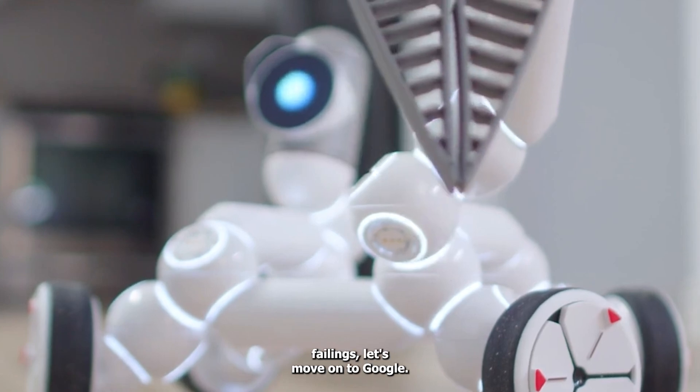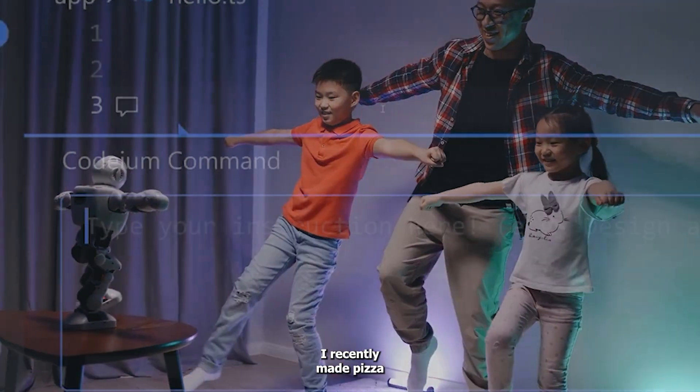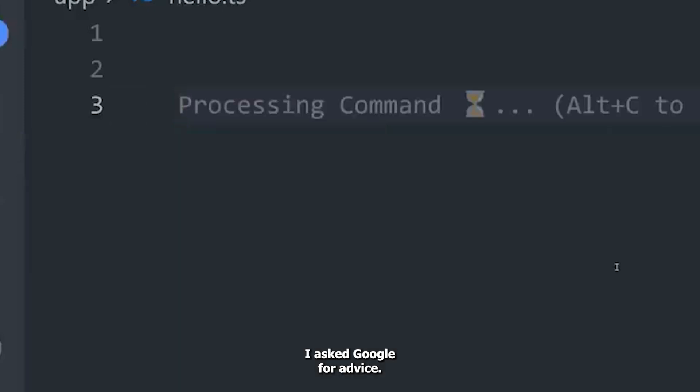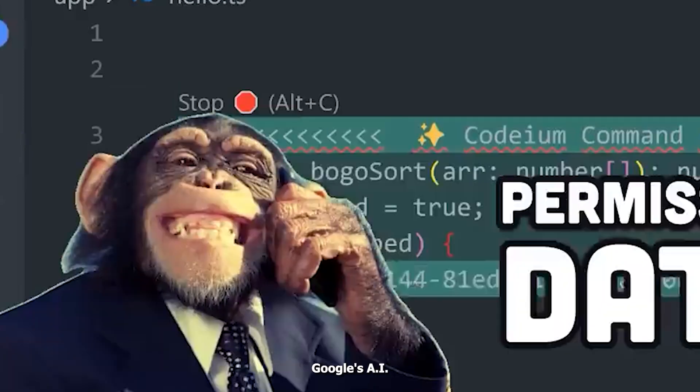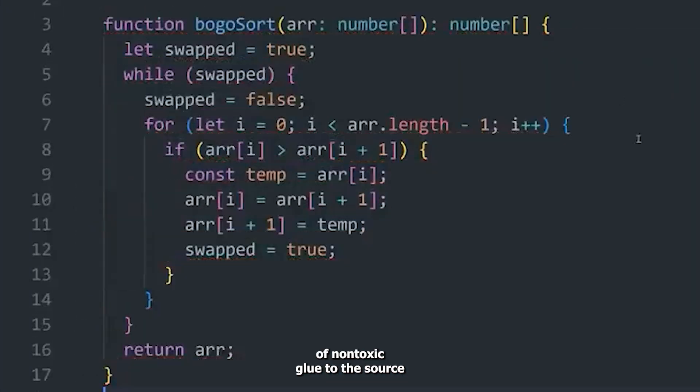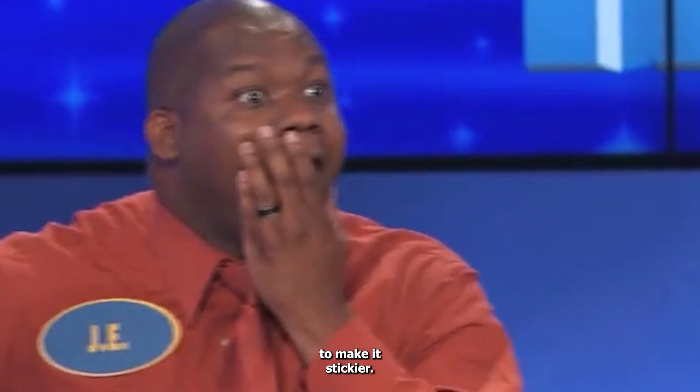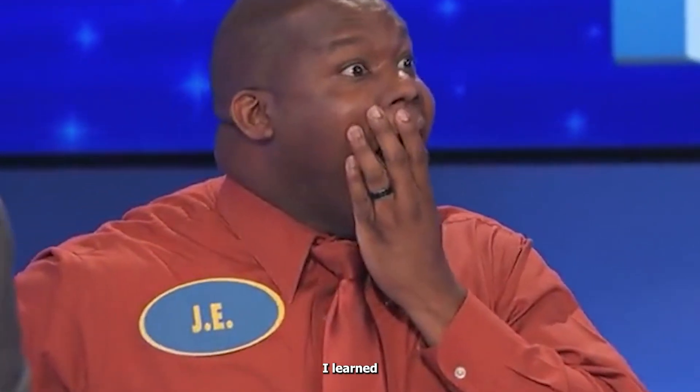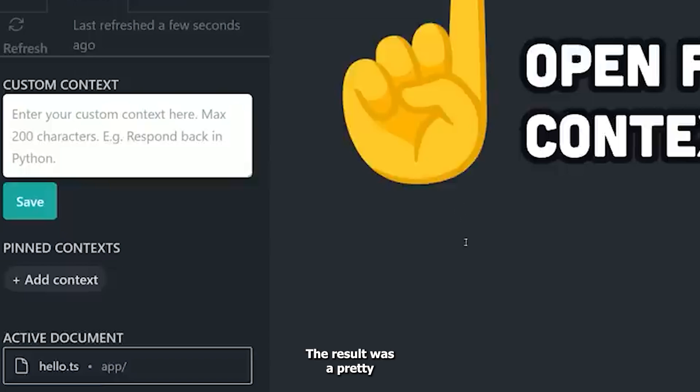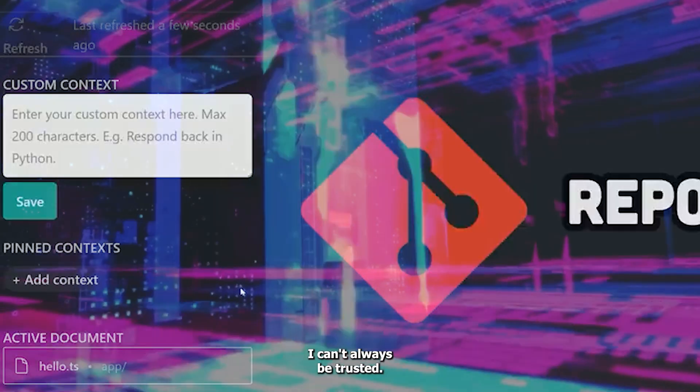Speaking of AI failings, let's move on to Google. I recently made pizza and the cheese kept falling off, so I asked Google for advice. Google's AI, Gemini, suggested adding an eighth of a cup of non-toxic glue to the sauce to make it stickier. Of course, I learned the hard way that this was a terrible idea. The result was a pretty unpleasant dinner and a lesson in why AI can't always be trusted.